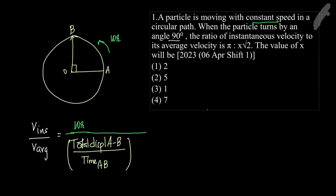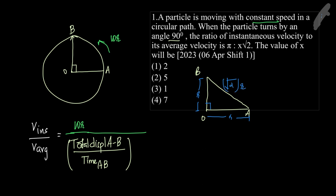Considering triangle AOB, both sides OA and OB equal R since it's moving in a circle. By the Pythagorean theorem, AB equals √2 · R. This AB is the shortest distance — in other words, AB is the displacement.